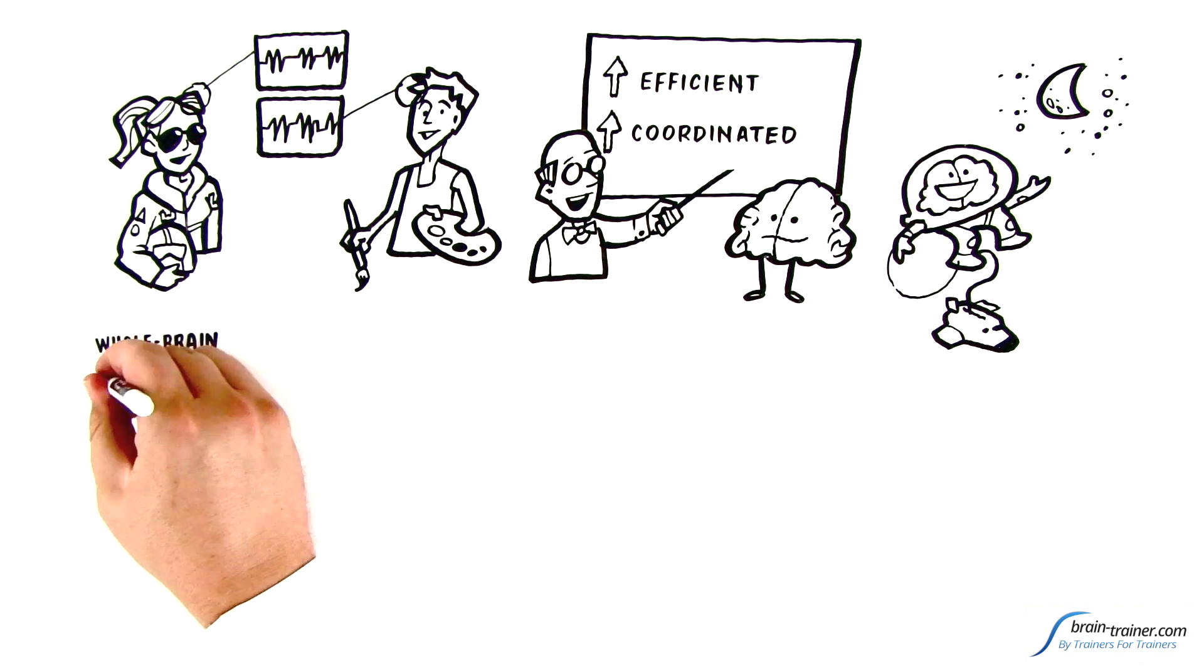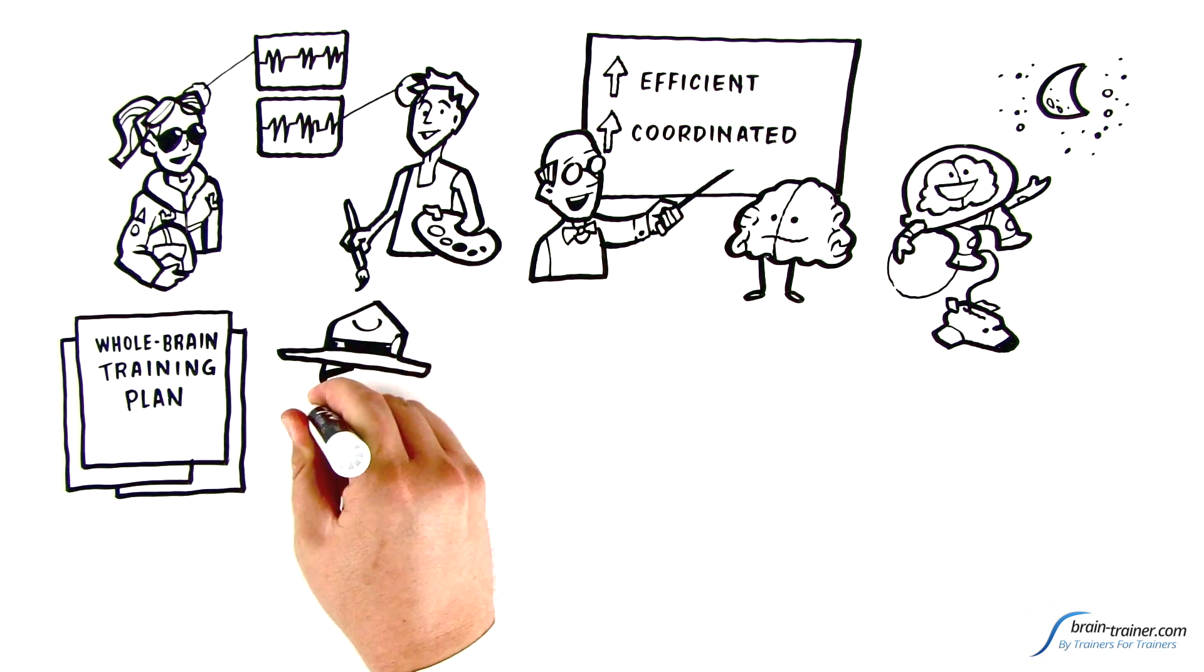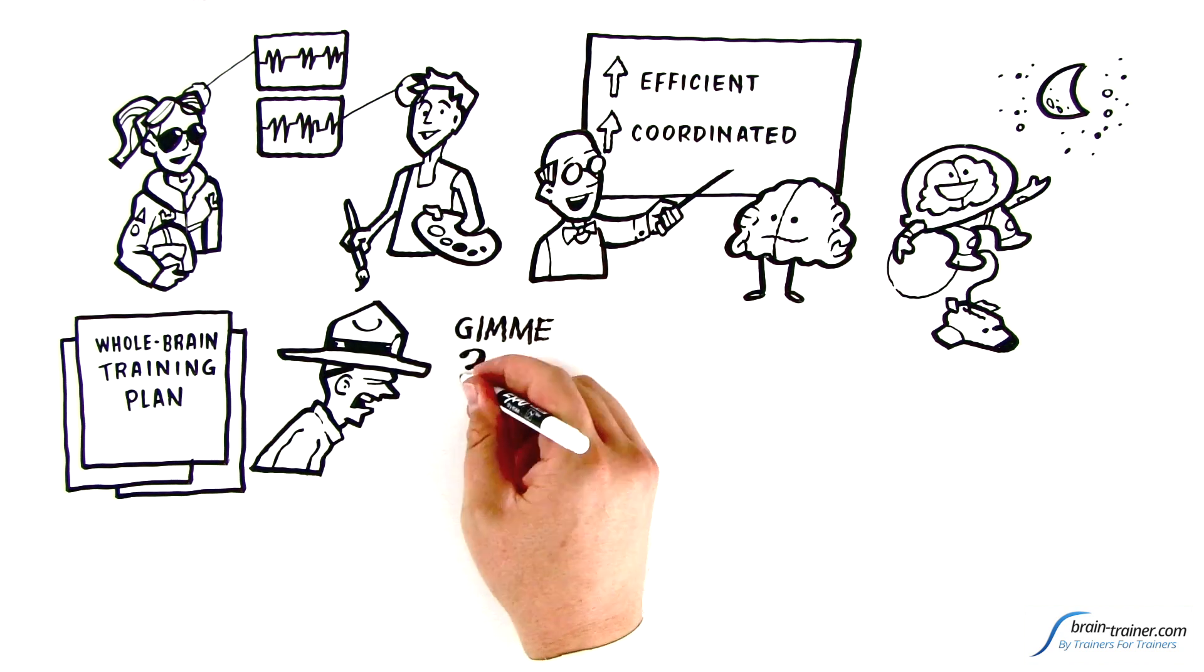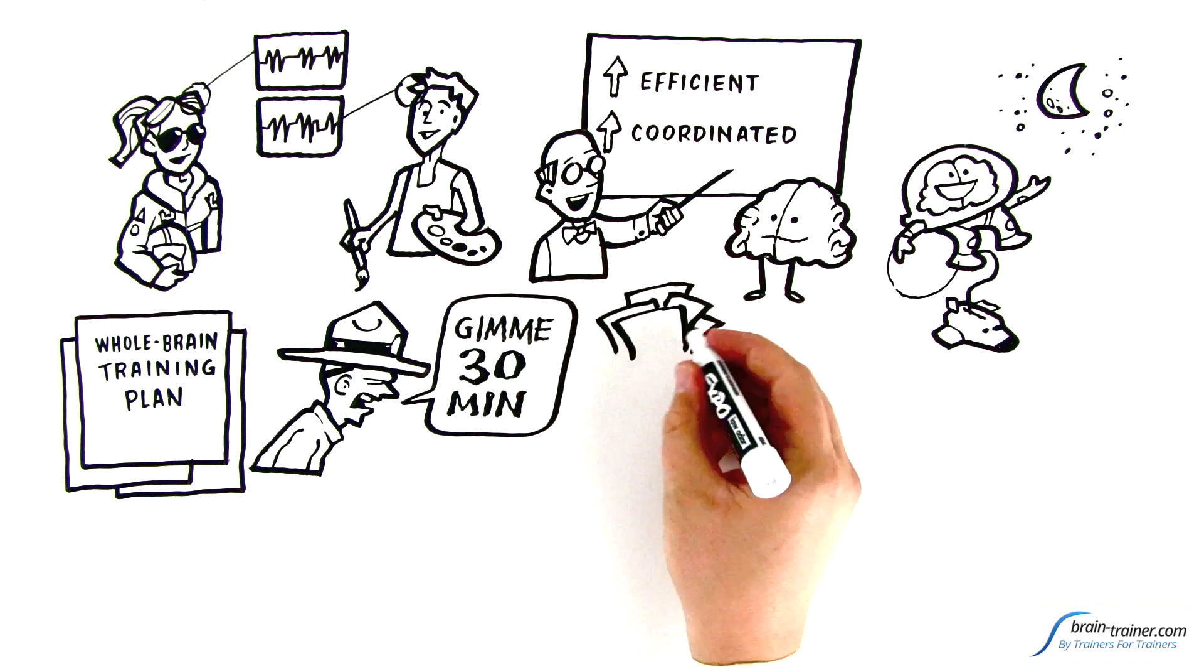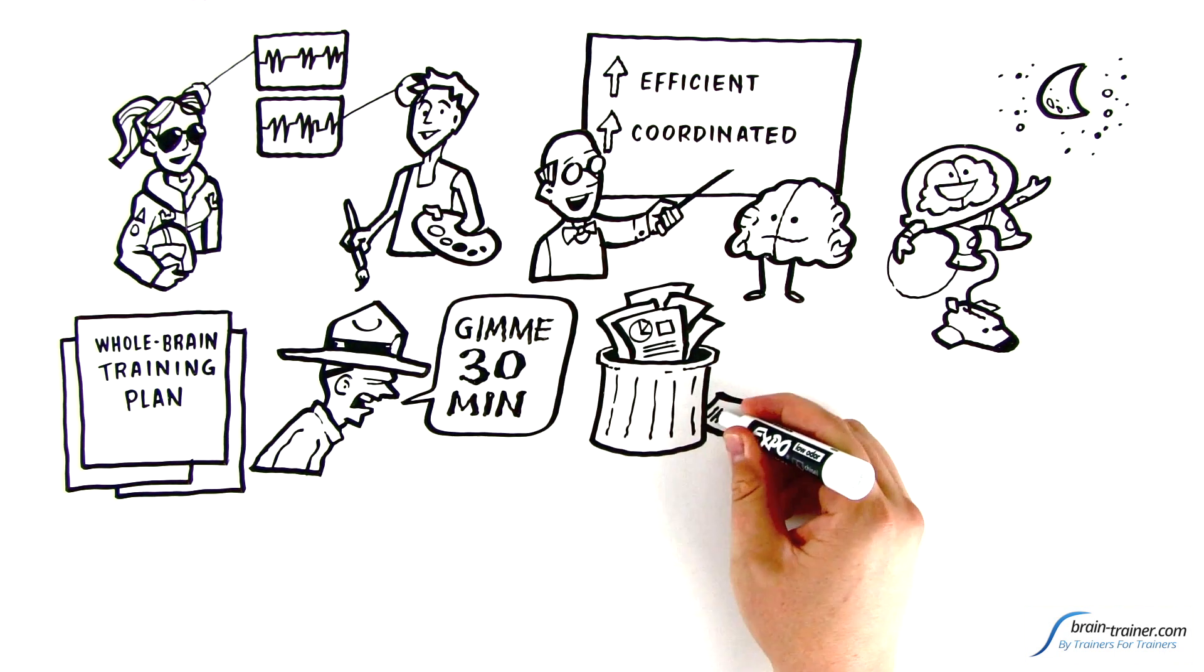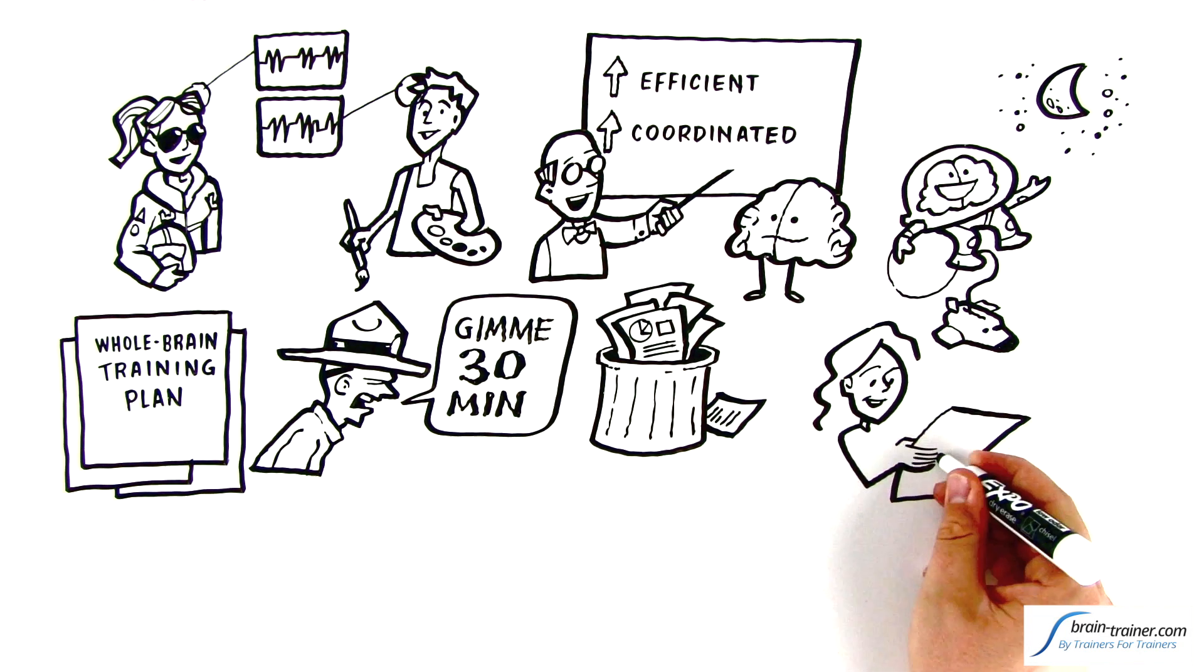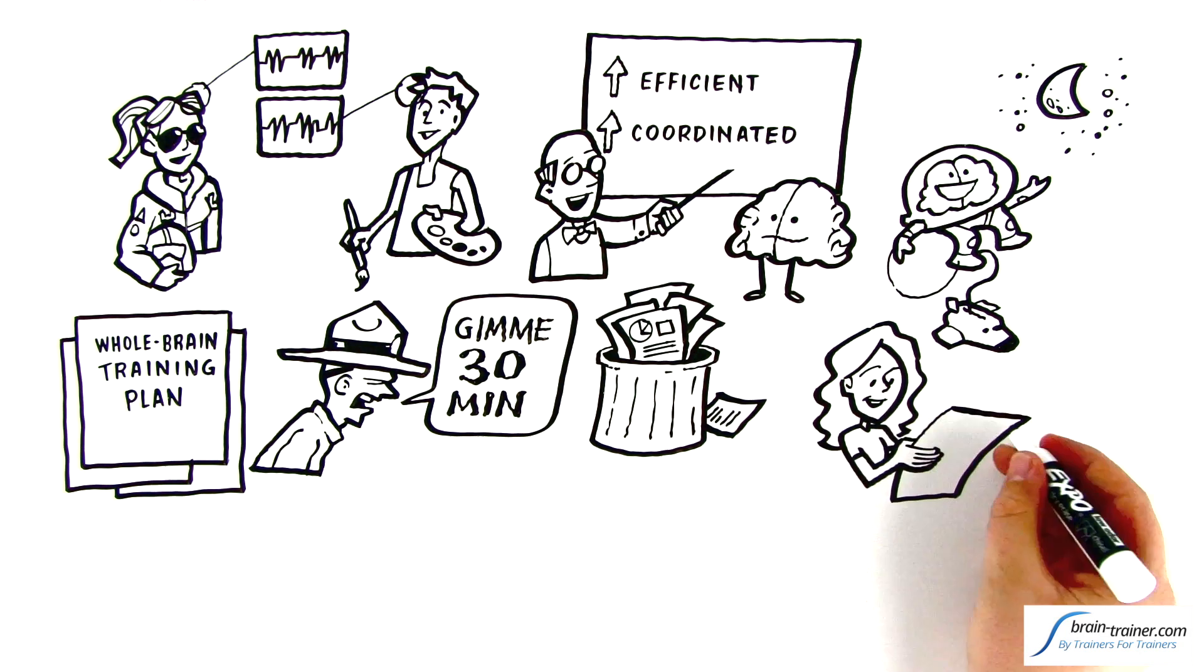That's the focus of the customized whole brain training plan, telling you the right things to train within 30 minutes. And it won't be page after page of numbers and graphs you can't understand. It will tell you in clear language what patterns your brain shows and how they might affect the habits in your life.